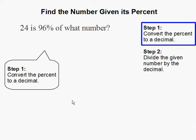Step 1: Convert the percent to a decimal. To do so, we take the decimal place, and there's no decimal place here so it will be at the end, and move it to the left two times, one, two. Our resulting decimal is 0.96.